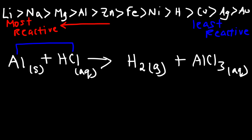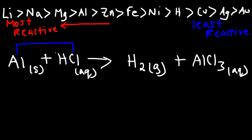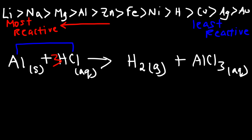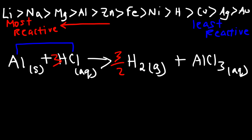Now we need to balance the chemical equation. What coefficients can we write so that all atoms are balanced? Right now we have 3 chlorine atoms on the right side but only 1 on the left, which suggests we put a 3 in front of HCl. But if we do that, the hydrogen atoms won't be balanced — we'd have 3 on the left but only 2 on the right. To make it equal we'd need the fraction 3/2, but we don't want fractions when writing coefficients — we want whole numbers.